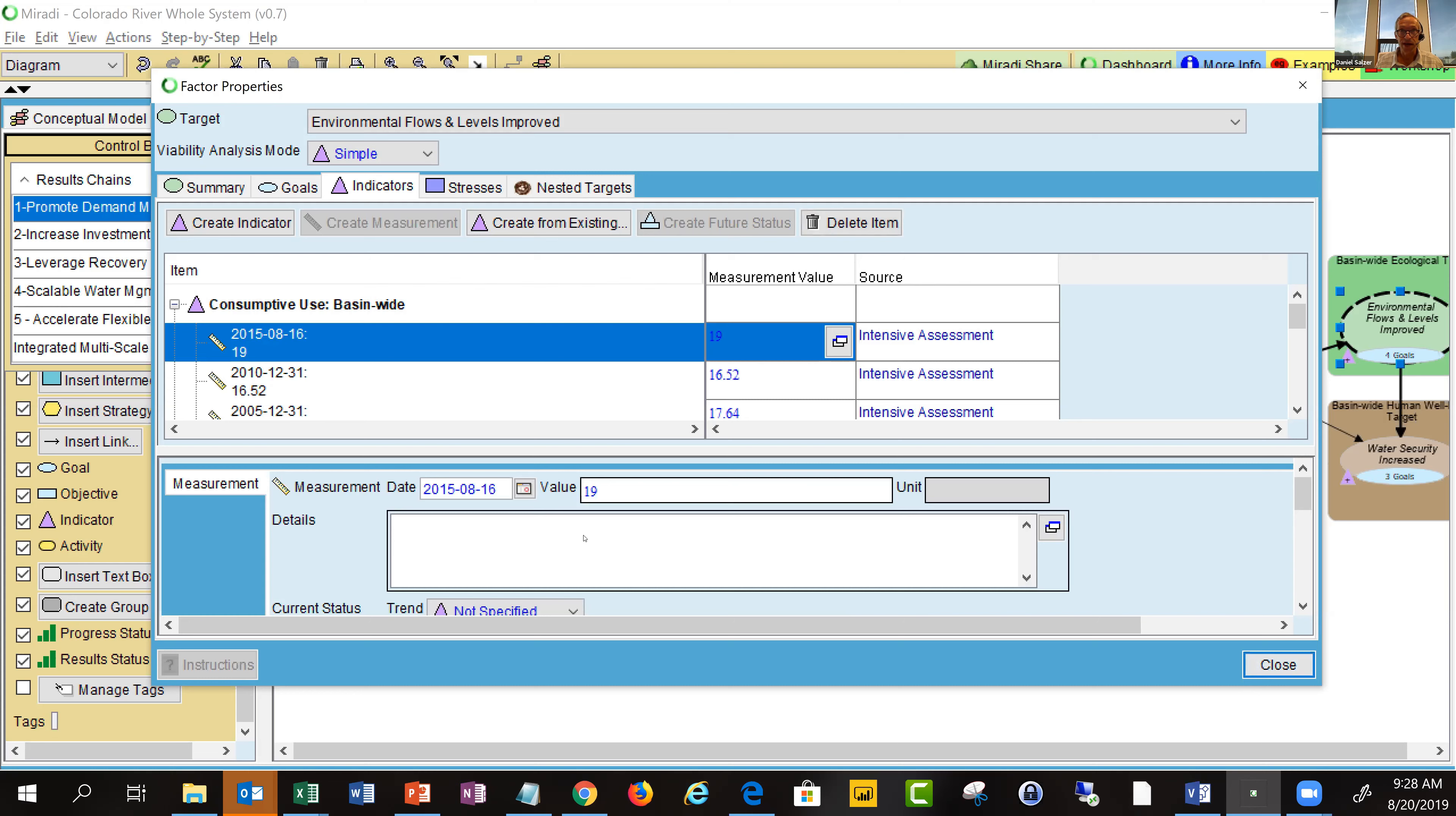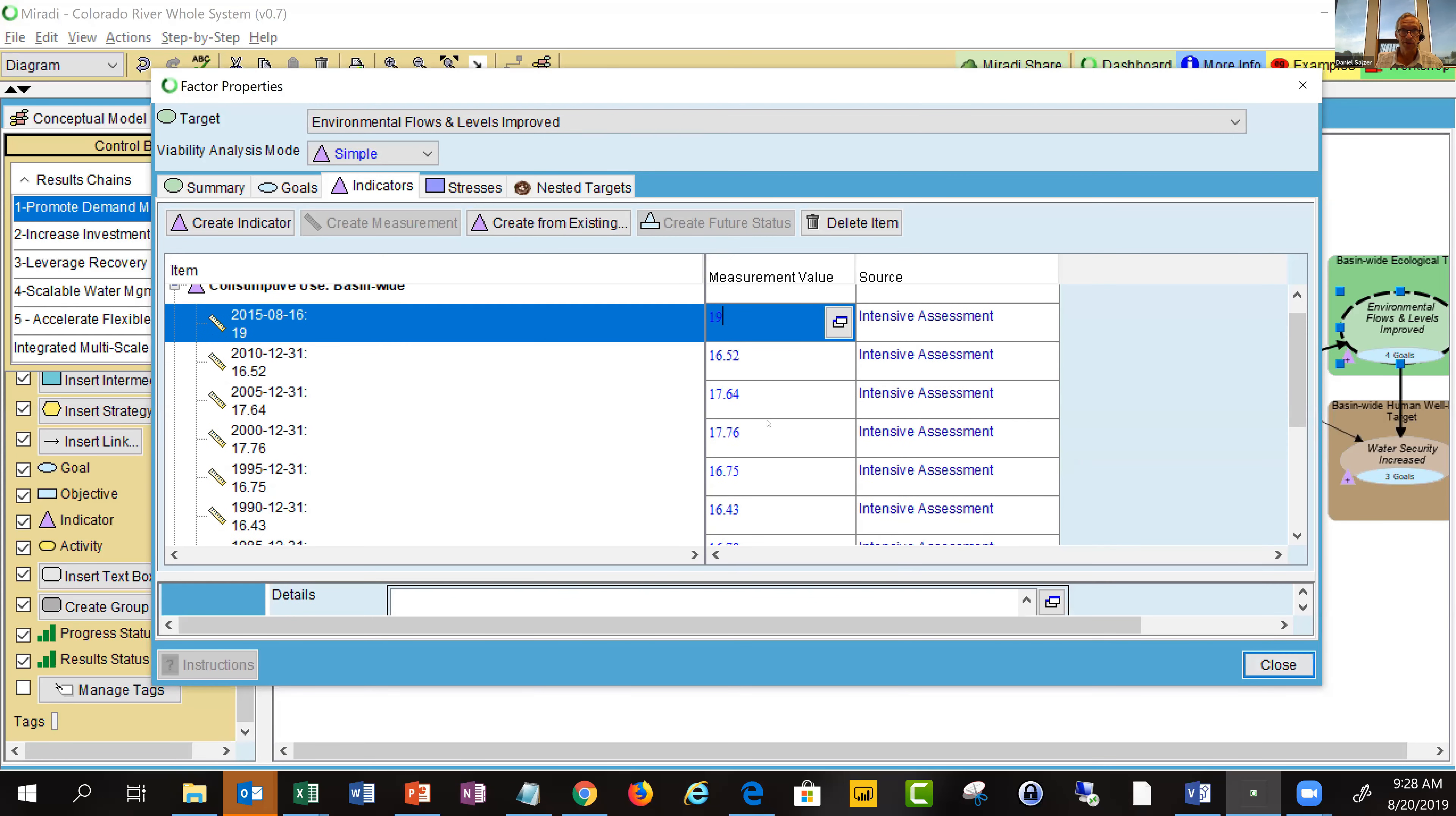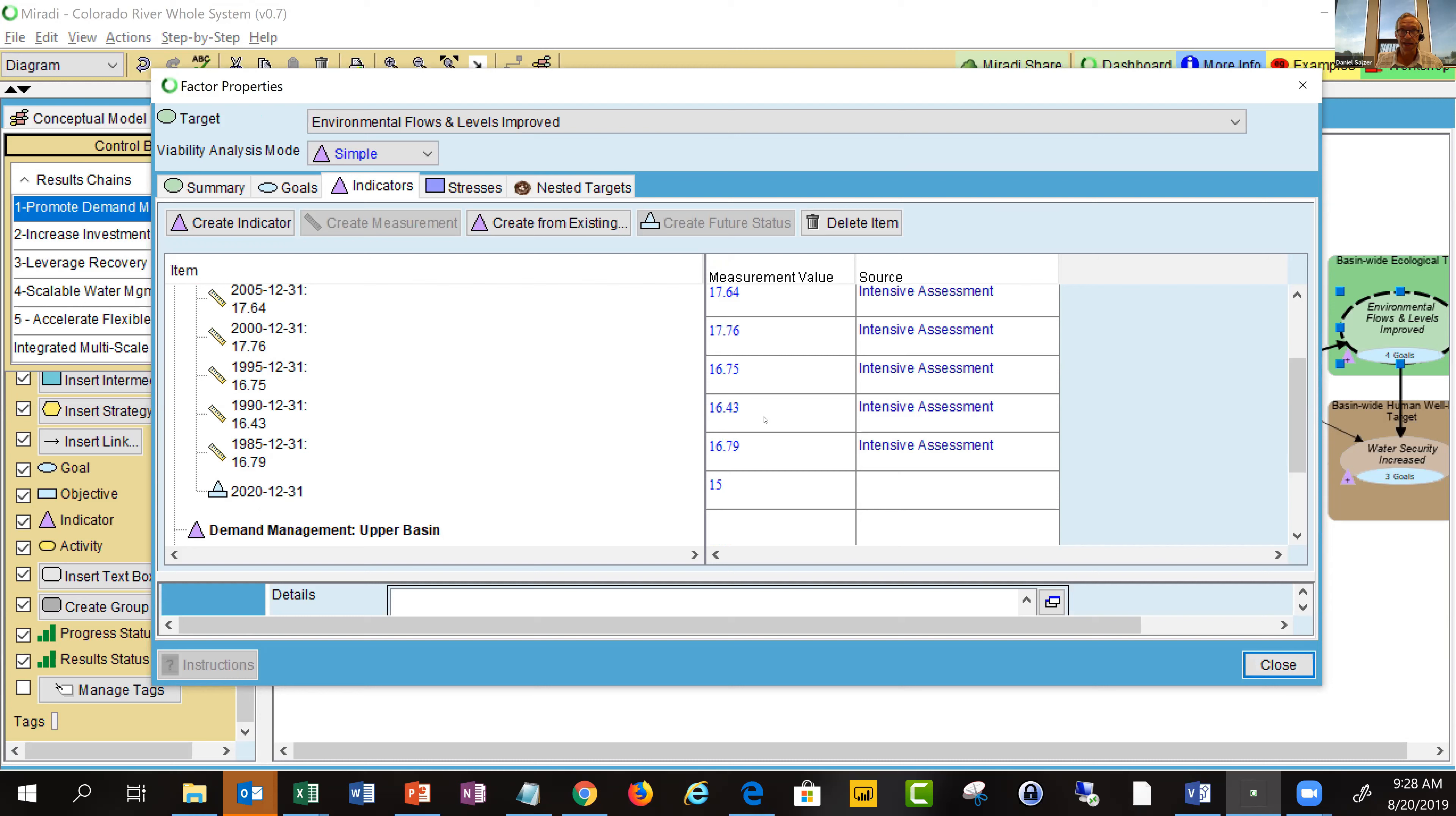For any one of these measurements over time, you can type that in and specify additional data on this dialogue box. If I scroll down, you'll see all the measurement data. At the bottom you'll see what the desired future value is. In this case, we're looking at million acre feet of water and we're trying to get it to 15 million acre feet.